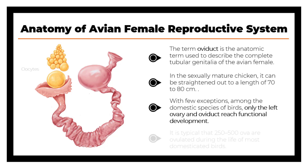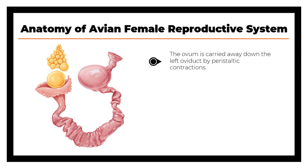It is typical that 200 to 500 ova are ovulated during the life of most domesticated birds. The ovum is carried down the left oviduct by peristaltic contractions. The oviduct can be subdivided into five functional regions, beginning with the ovarian end and extending to the cloaca: the infundibulum, magnum, isthmus, uterus or shell gland, and the vagina.